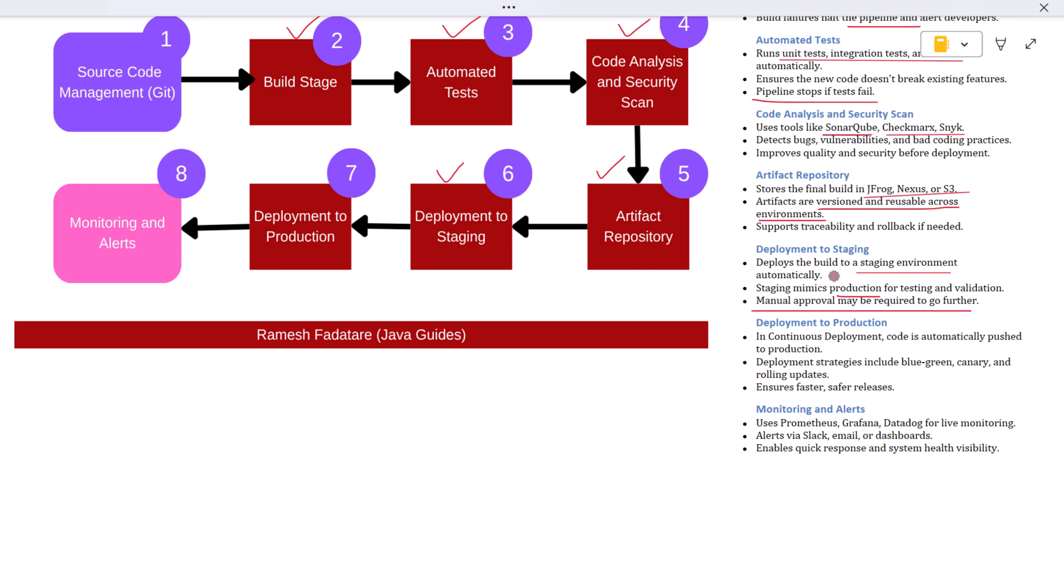Others go further, and this is where continuous deployment comes in. In continuous deployment, if the staging deployment succeeds, the same artifact is then automatically pushed to production. That means your users can get the latest updates instantly without delays or manual processes. This is often done using deployment strategies like blue-green deployments, canary releases, or rolling updates to reduce downtime and risk. It's fast, safe, and incredibly efficient, especially for agile teams who release often.